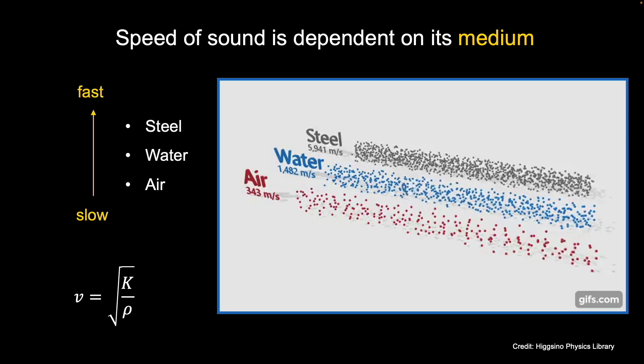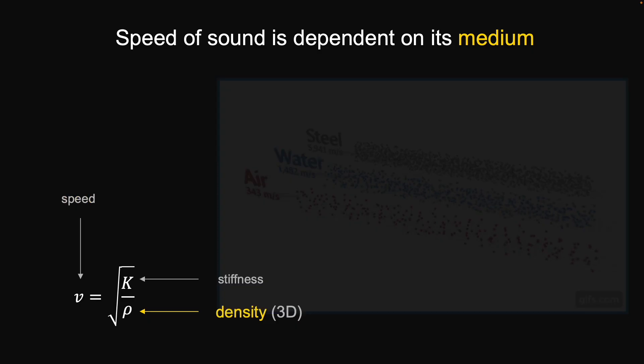But the speed is dependent on its medium. If you saw that steel went really fast, water is already finished, and that bottom one air molecules are still bouncing back and forth. Steel is faster than air for the speed of sound. And it's dependent on its medium. Steel is very dense compared to air.